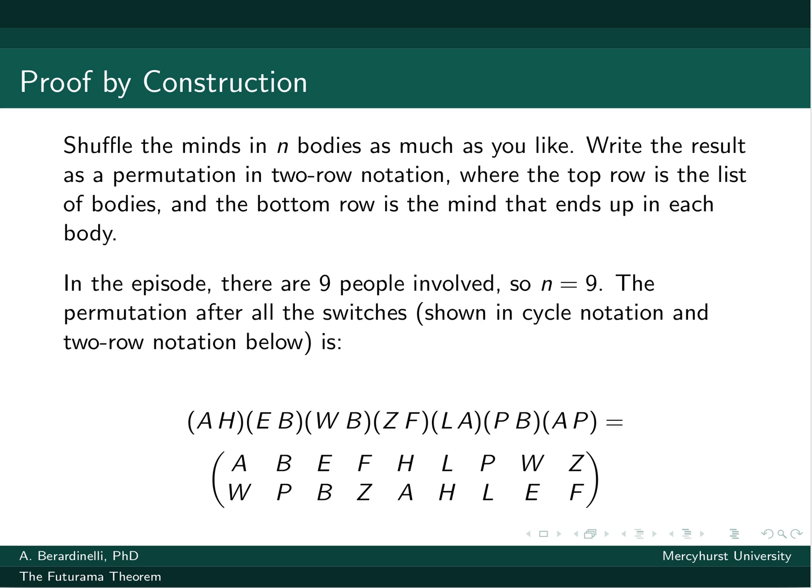So in this episode, there are nine people. N is nine. We're talking about a permutation of nine objects, nine minds, or nine bodies, depending on how you look at it. And so if you look at all the switches that happen, first, the Professor and Amy switch.